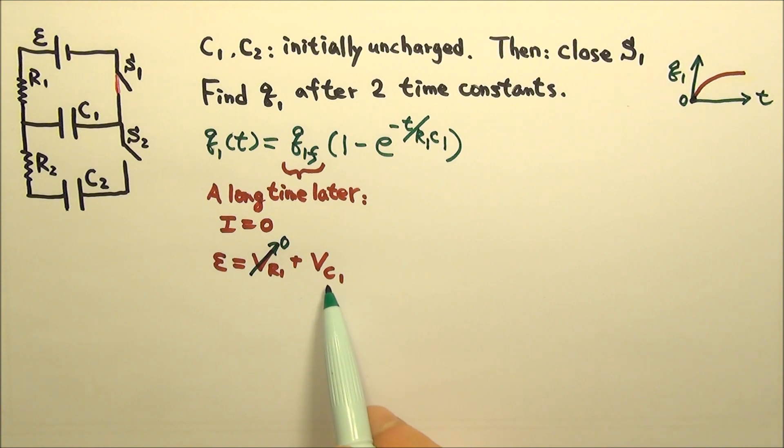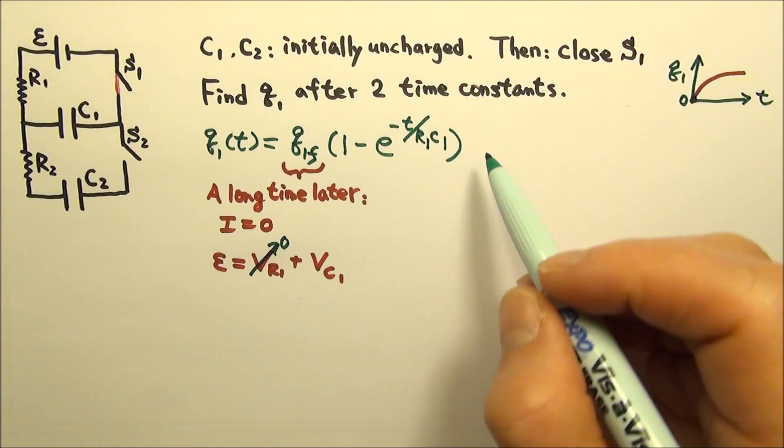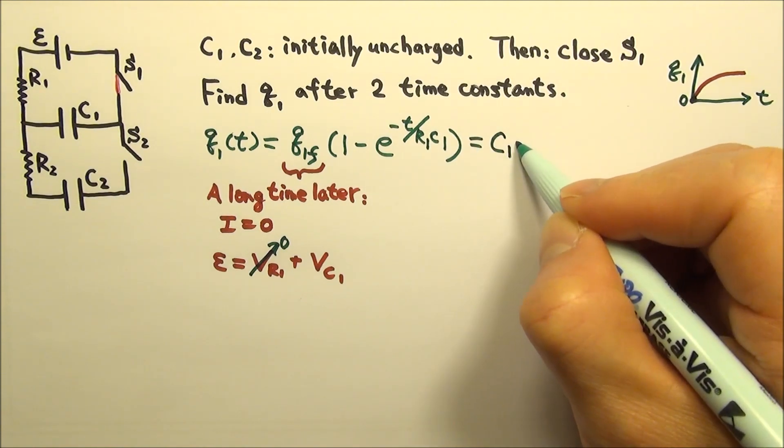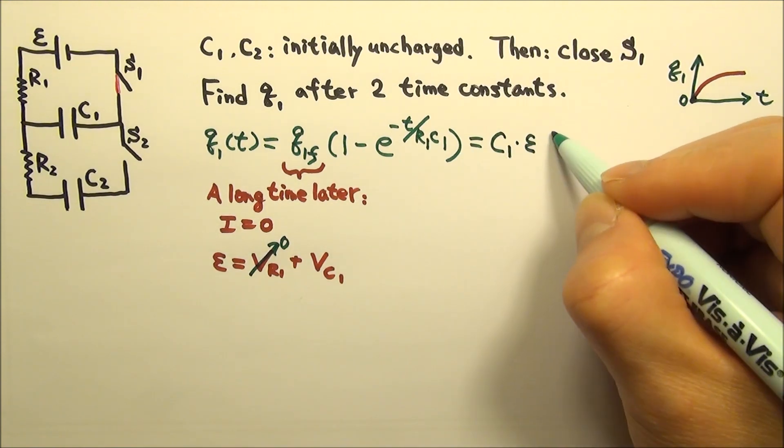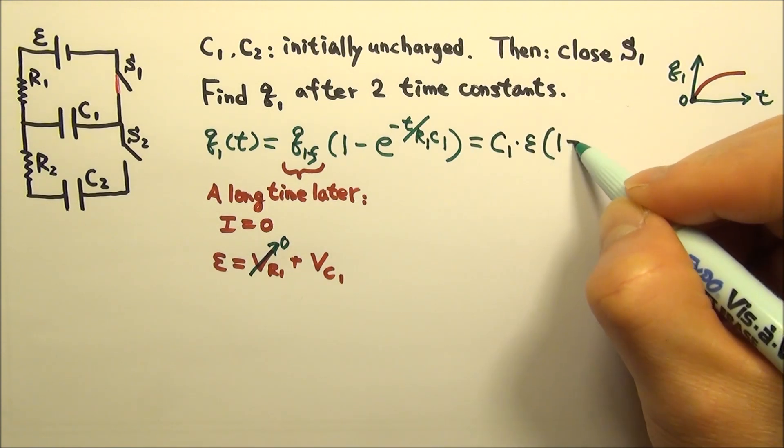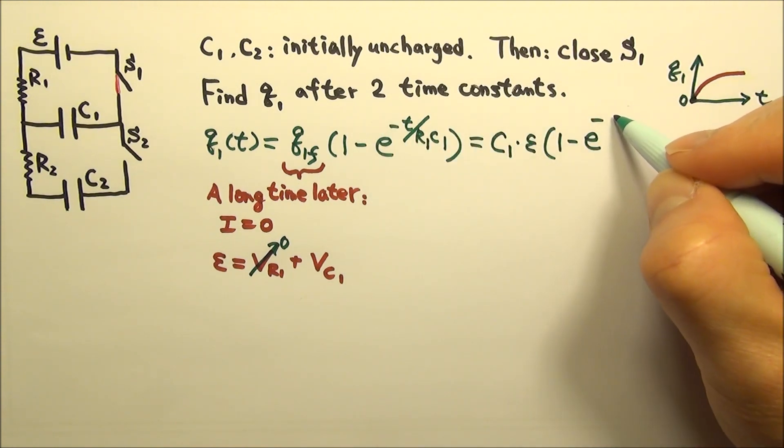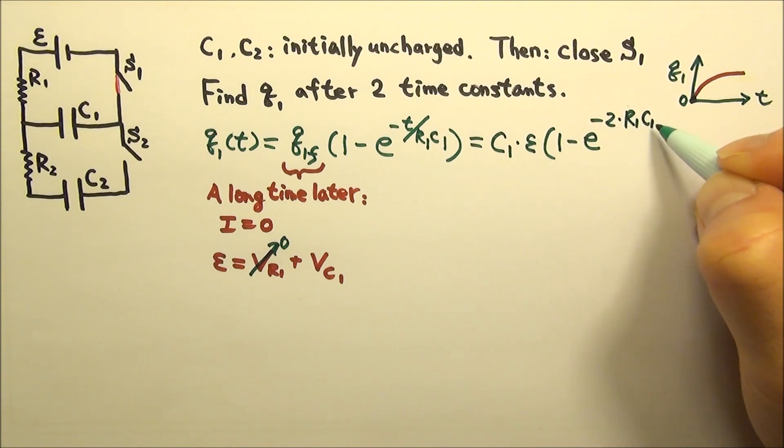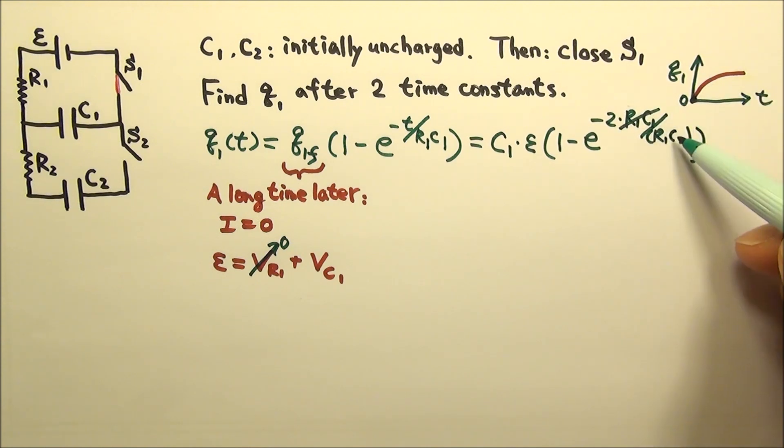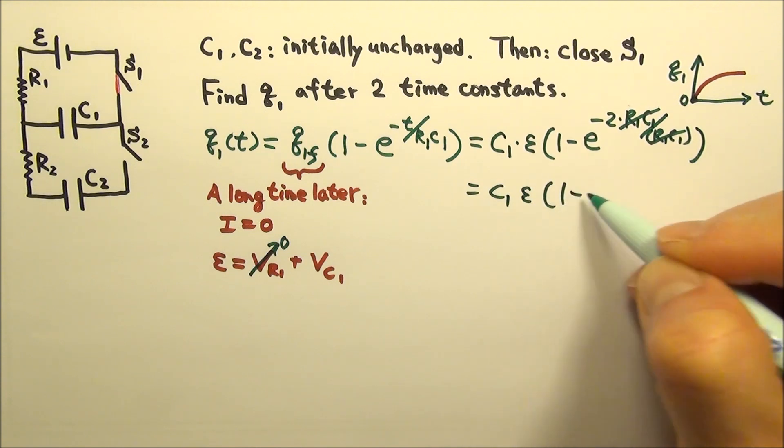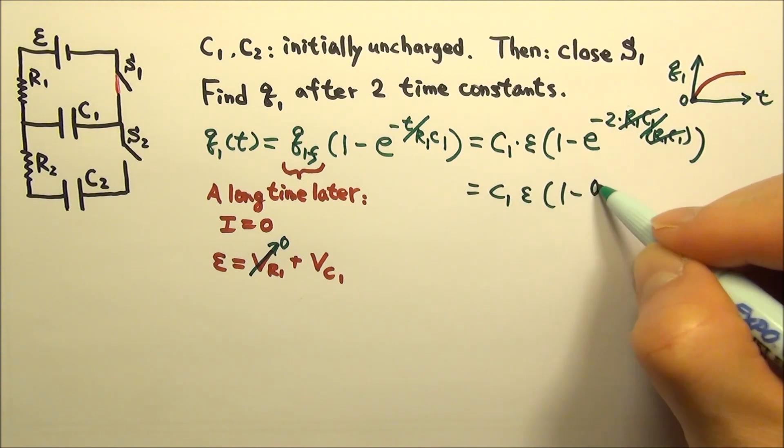So R1 gets no voltage, and the capacitor C1 gets all the EMF e. So the final charge equals Q equals CV, so it's C1 times the voltage EMF e. And then times 1 minus e to the negative t is now 2 times the time constant. So this is 2 times R1C1 over R1C1. So the R1C1 cancel.